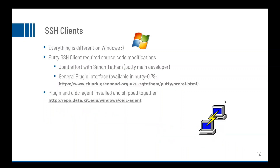Since everything is different on Windows, we have worked together with the PuTTY developers to create a general plugin interface, which is now available in the latest version 0.7.8. Our OIDC agent for Windows ships this plugin, which makes it really easy to use from Windows.